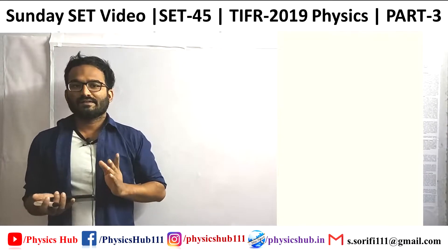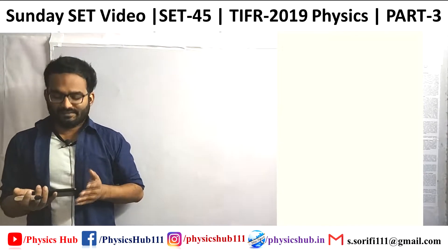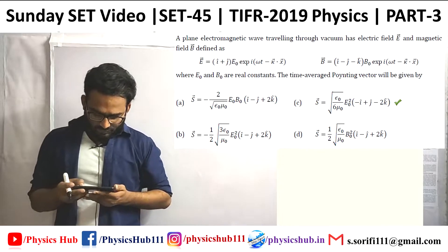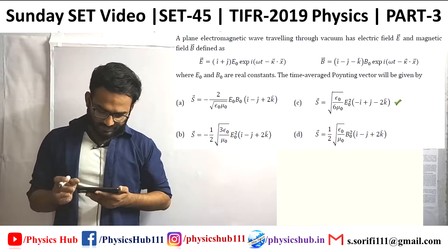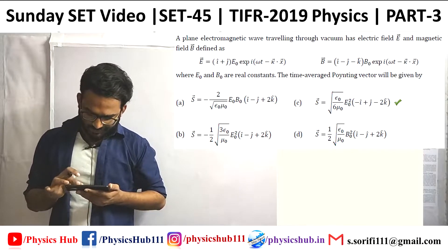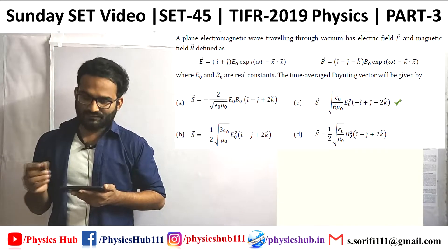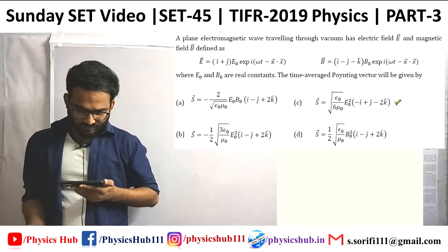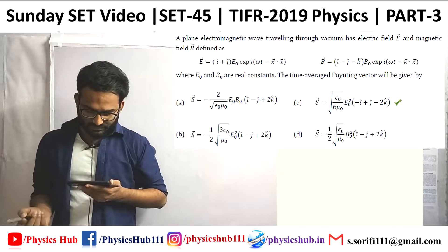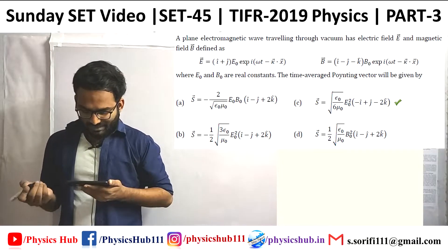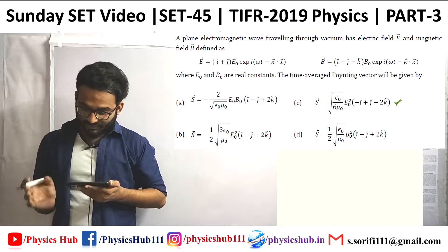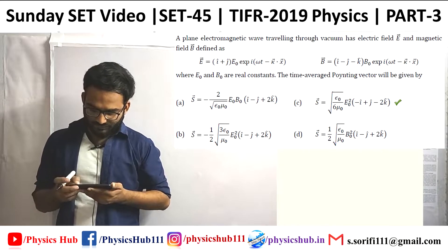The first question reads like this: A plane electromagnetic wave traveling through vacuum has electric field E and magnetic field B defined as follows, where E₀ and B₀ are real constants. The time-average Poynting vector will be given by?